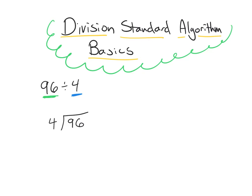The first step when we're solving division problems with the standard algorithm is we're going to need to do some division. It seems kind of silly to say, but we are in fact going to need to do some division. But we're not going to tackle this whole big number 96 all at once. We're going to focus only on specific place values one at a time, starting at the largest place value which is the tens. The question we need to ask ourselves is: what is 9 divided by 4?